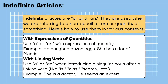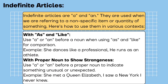With linking verb: use 'a' or 'an' when introducing a singular noun after a linking verb like is, was, seems, etc. Example: she is a doctor; he seems an expert. With 'as' and 'like': use 'a' or 'an' before a noun when using 'as' and 'like' for comparison. Example: she dances like a professional; he runs as an athlete.